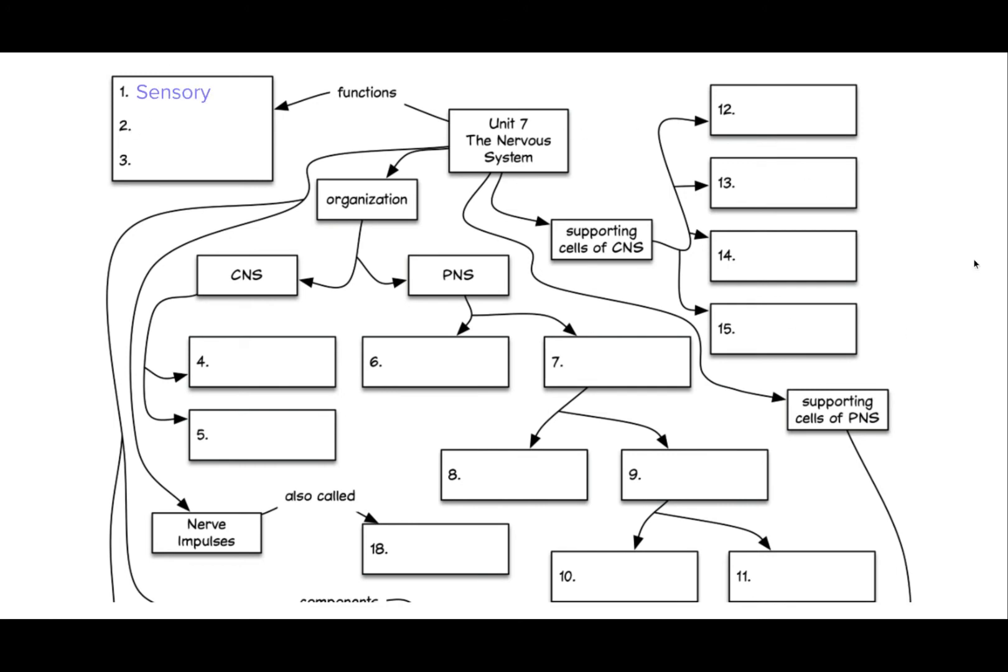Our main functions of our nervous system: It is meant to sense the world around us, so there's a sensory. The integrative parts decide and make decisions about what you're going to do based on what you've sensed. And then there's the motor reaction, what you can control, so your muscles and glands.